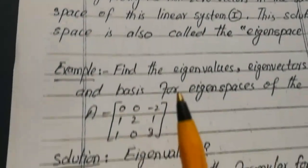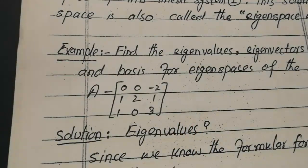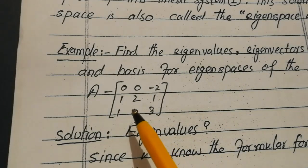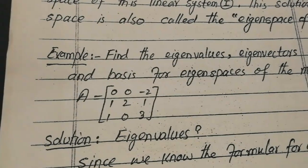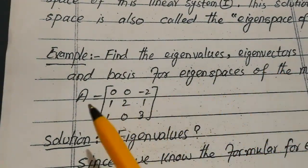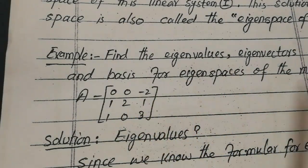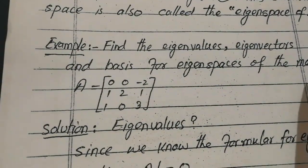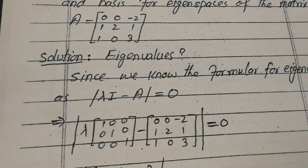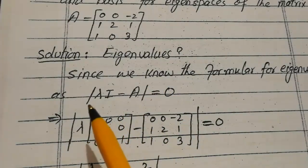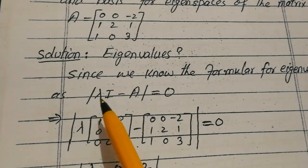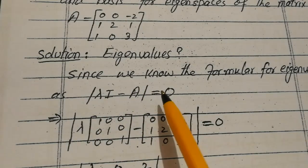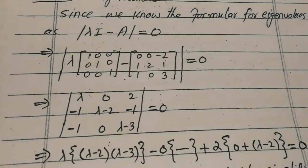To explain this whole process, consider the example matrix A = [0, 0, −2; 1, 2, 1; 1, 0, 3]. We need to find its eigenvalues, eigenvectors, and the basis for the eigenspaces. We start with eigenvalues by setting det(λI − A) = 0.